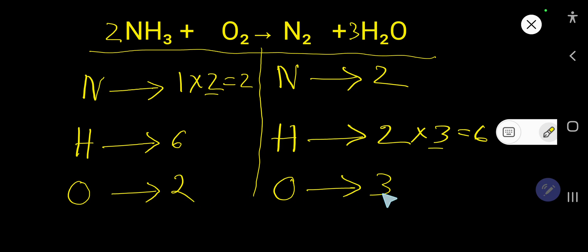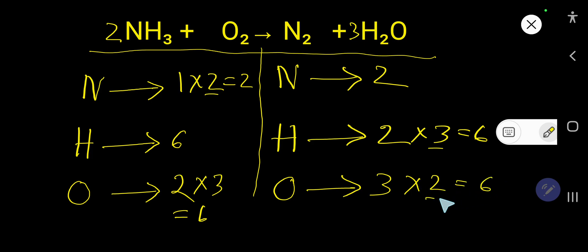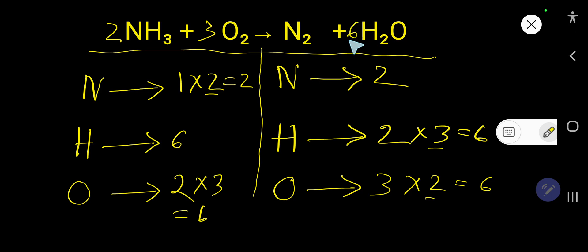Now balance oxygen: two O on the left (O₂), three O on the right. Multiply O₂ by three to get six, and multiply H₂O coefficient by two to get six as well. Place 3 before O₂ and 6 before H₂O. With coefficient 6 on H₂O, the number of hydrogen becomes twelve. Oxygen is now six on both sides.